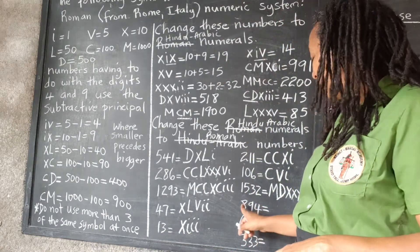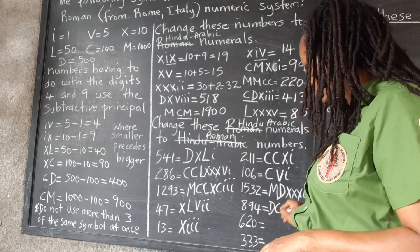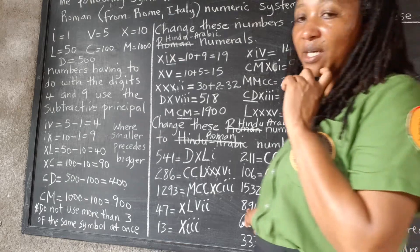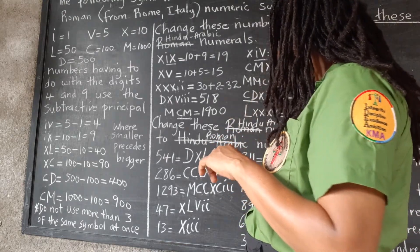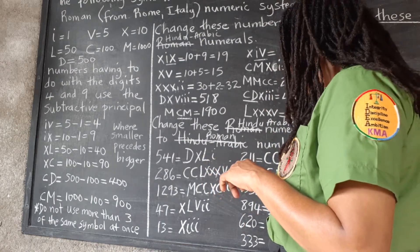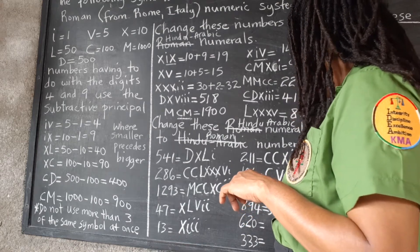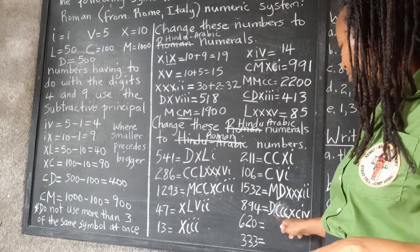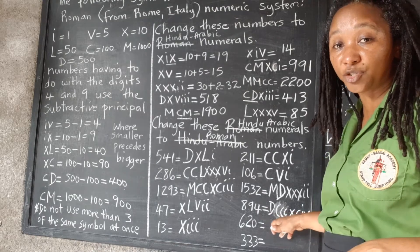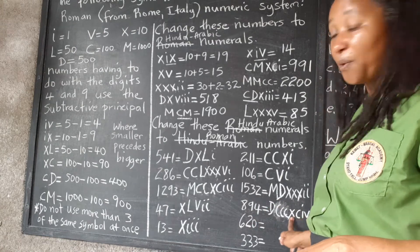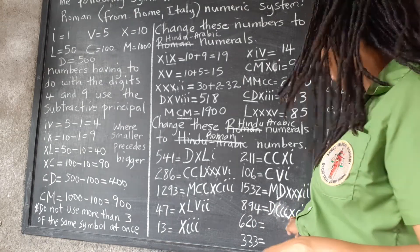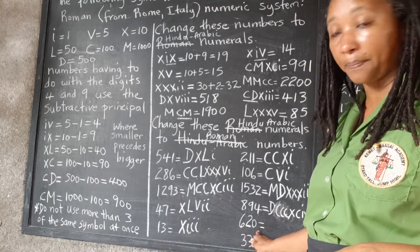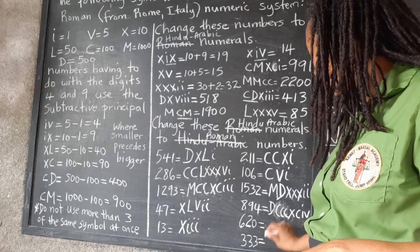For 894: the 800 would be 500 and three 100s — DCCC. The 90 uses the subtractive principle: 100 take away 10 — XC. And the 4 would be 5 take away 1 — IV. So 894 is DCCCXCIV.